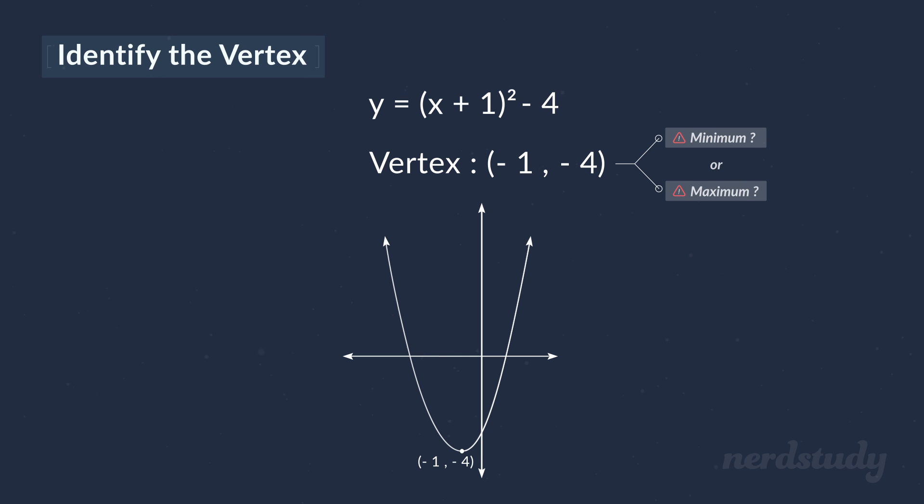Well, if you remember correctly, the vertex is a minimum if the a is positive, and the vertex is a maximum if our a is negative. Since the a is equal to 1 here, which is positive, we know that we are looking at a graph that opens upwards. Awesome!